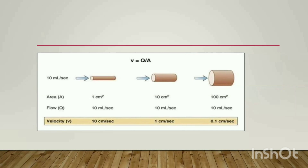In the second example, if the area is ten centimeters squared and the flow rate is ten milliliters per second, the velocity is one centimeter per second. In the third example, if the area is one hundred centimeters squared and the flow rate is ten milliliters per second, the velocity is 0.1 centimeters per second. As the area increases, the velocity keeps decreasing.